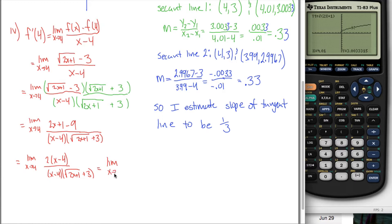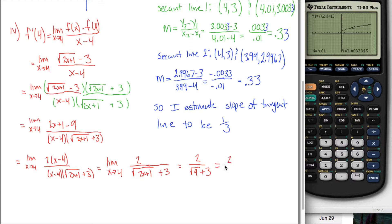What I'm left with is the limit as x approaches 4 of 2 divided by the square root of 2x plus 1 plus 3. To evaluate this, I change all the x's into 4's and get 2 divided by the square root of 9 plus 3. The square root of 9 is 3, and 3 plus 3 is 6, so I get 2 over 6, which is 1 over 3. My estimate was right.